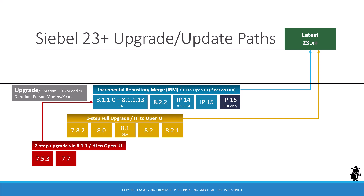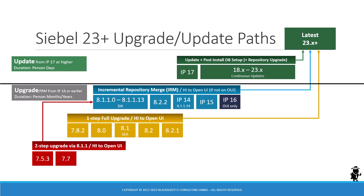If you are already on IP 17 and higher — which includes IP 17 itself and the non-IP releases Siebel 18 through 23 at the time of this recording — you can benefit from the continuous update releases. If you're on any of those releases, you can run an update process that includes a utility called post-install database setup. Optionally you can run a repository upgrade, and that will take just a few person days. That's one of the reasons we say update often — to practice and get the latest features, security, and bug fixes from Siebel CRM.